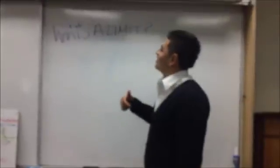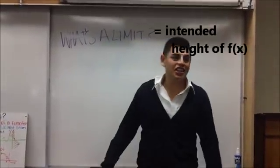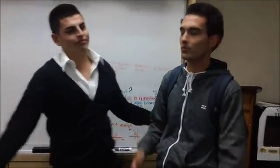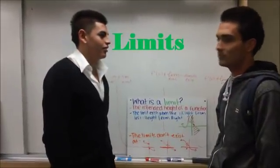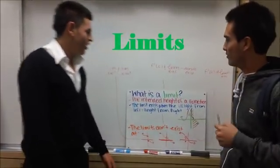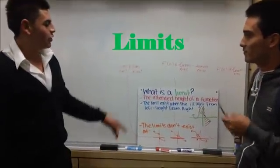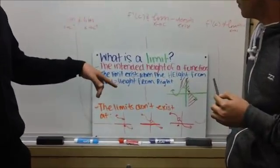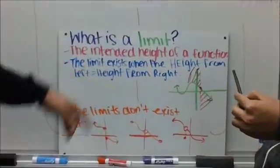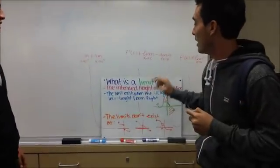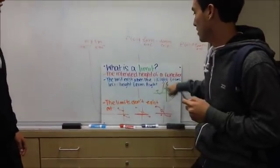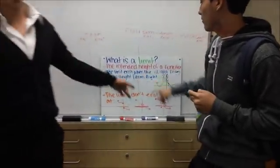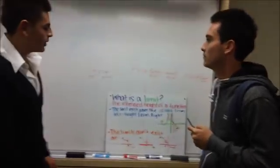First of all, we're going to describe what's the limit. A limit is the infinite height of a function. It's Fernando. Teach, bro — do you want me to do this or what? Alright, so the limit exists when the height from the function left to the right — the limit exists when the height from the left equals the height from the right. Okay, that makes sense now.